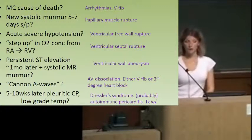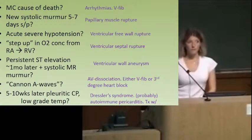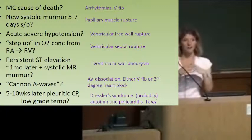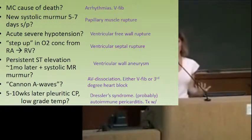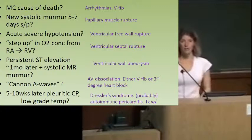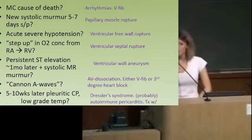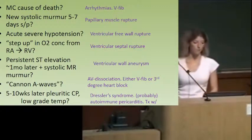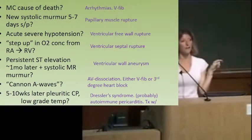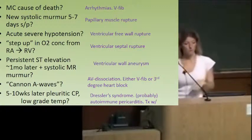Regurgitation from papillary muscle rupture. The papillary muscles can become ischemic, weaken in the remodeling phase, rupture, and that causes a regurgitation murmur — a new systolic murmur. What if there's a murmur but they also have acute hypotension and are basically on death's door? The free wall — that's a ventricular free wall rupture. If you notice a step-up in oxygen concentration between the right atrium and the right ventricle, that's septal rupture.